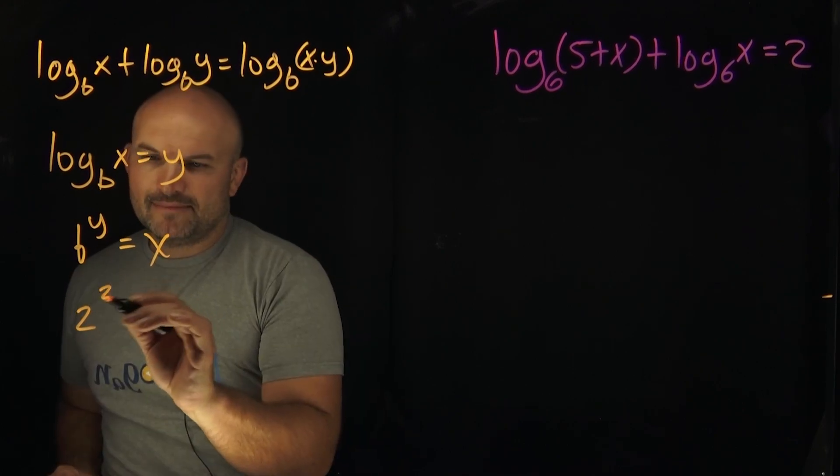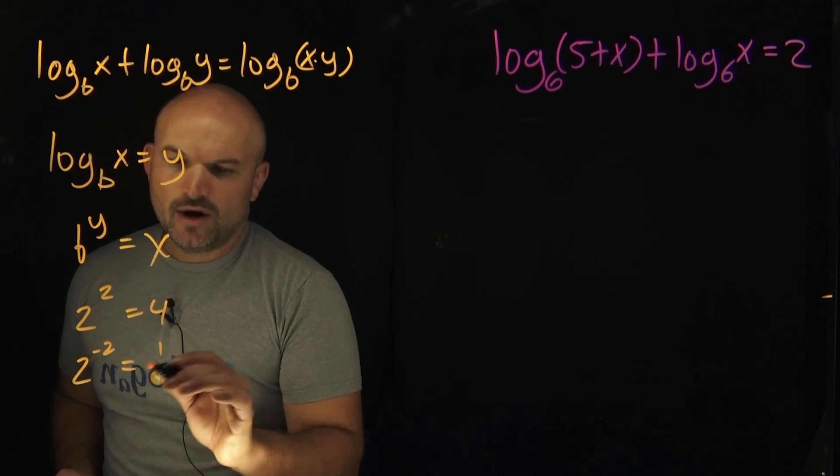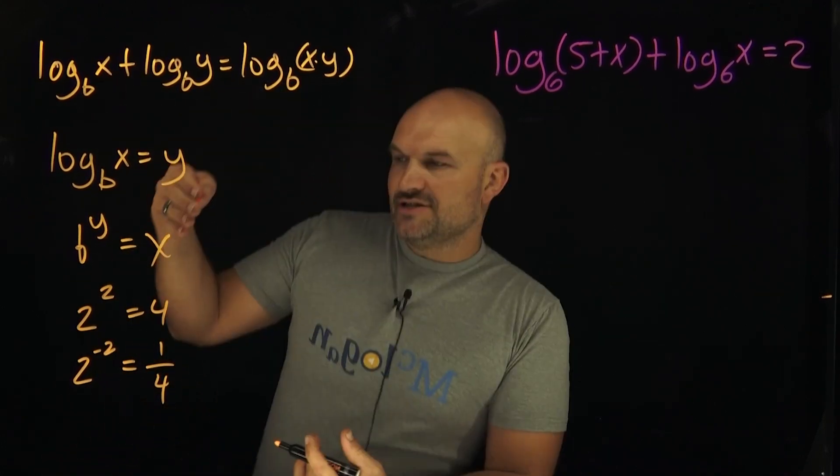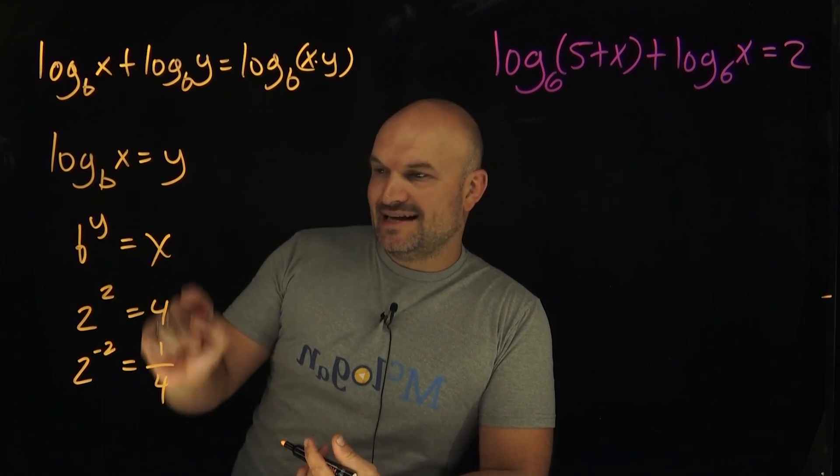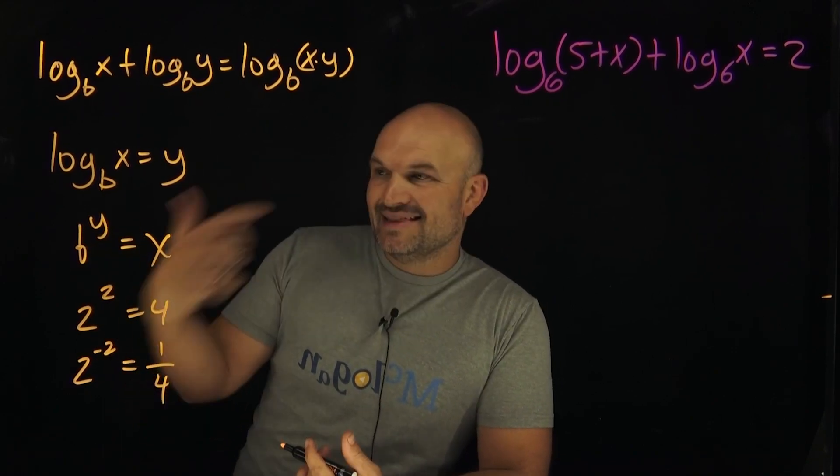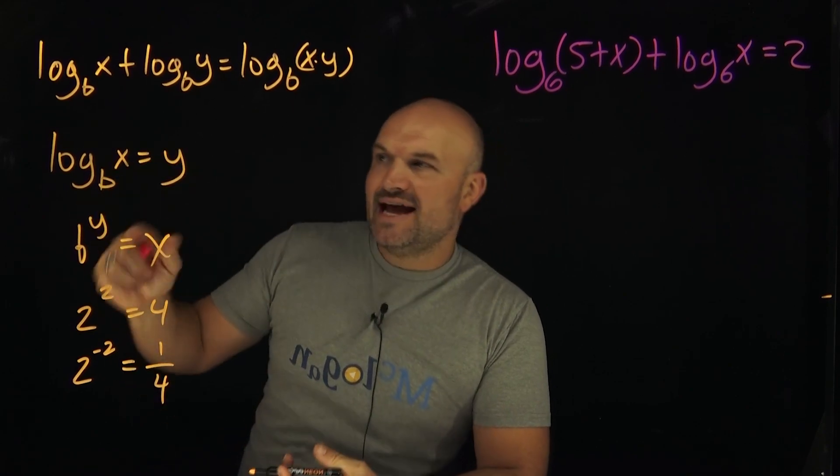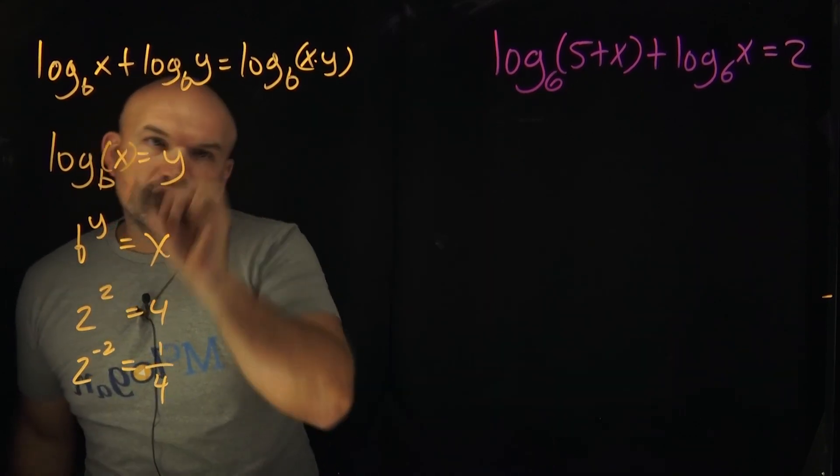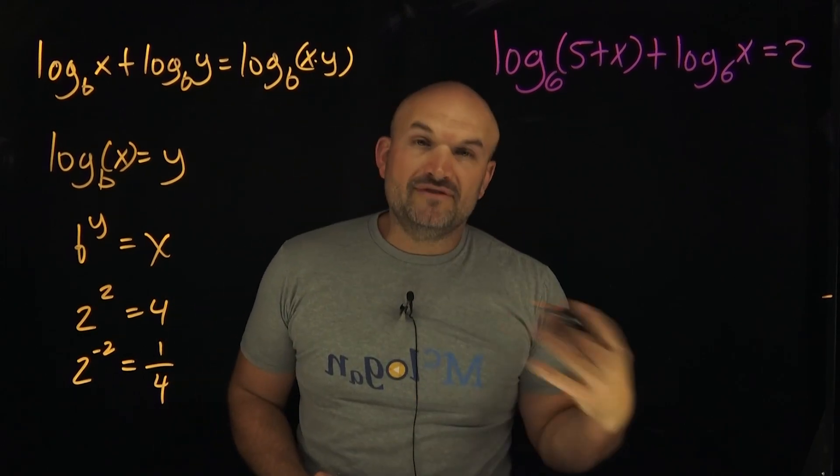If I take the 2 and raise it to the negative second power, that's going to equal 1 over 4. We're going to reciprocate it. So there's no number in the real number system that I can take 2 and raise it to that's going to make this value equal to negative. That is why x is always going to be positive. And so therefore, taking a logarithm of a number, this argument always has to be positive. That's going to be a part of our understanding for finding the extraneous solution.